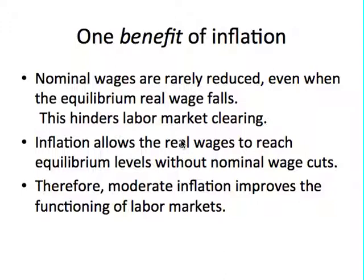For example, if there is a change in economic conditions which leads to an increase in the supply of labor or a decrease in the demand for labor, it might happen that the equilibrium real wage falls. So although the equilibrium real wage falls, the firms on the other hand cannot really cut the nominal wage. So how can the fall in real wage be achieved here when the equilibrium real wage has actually fallen?